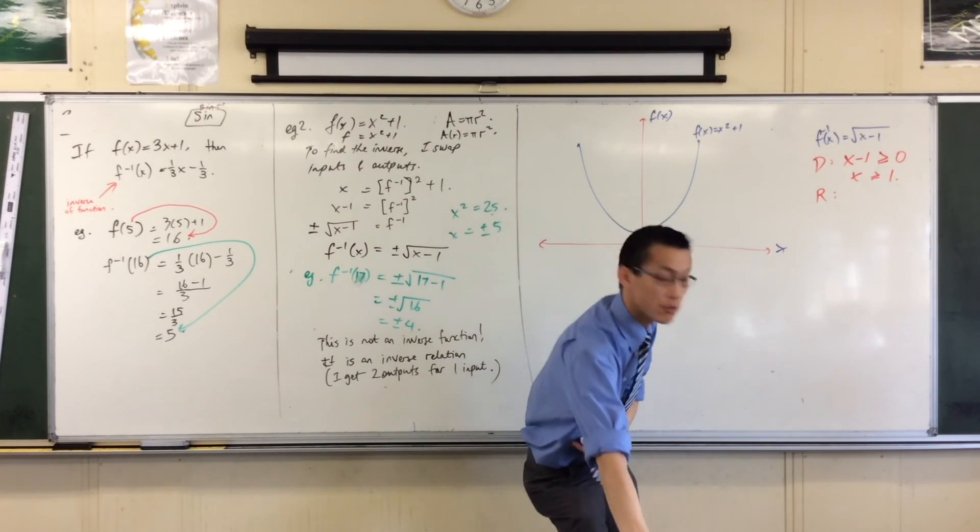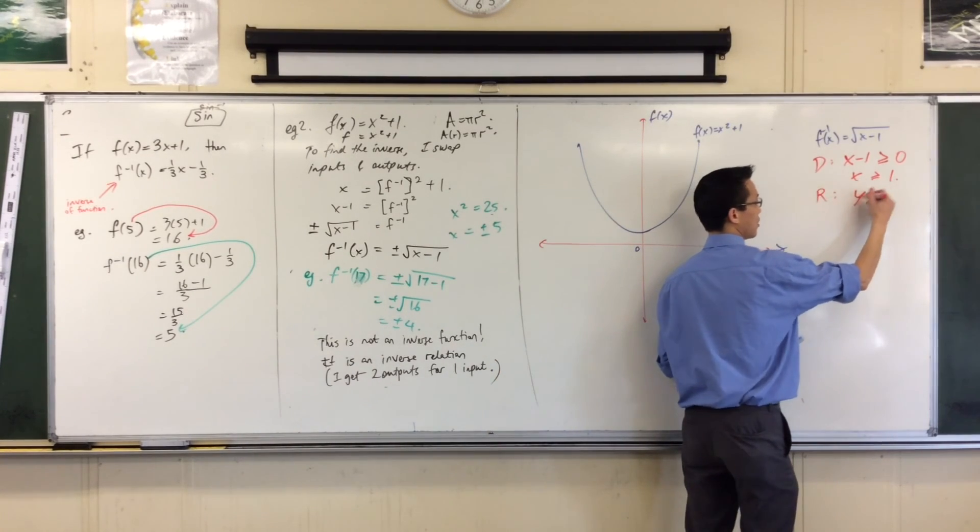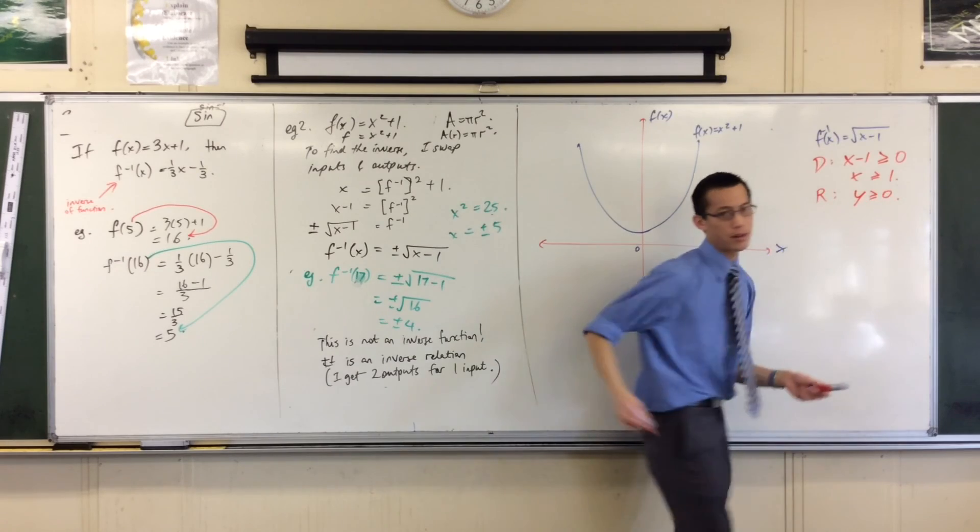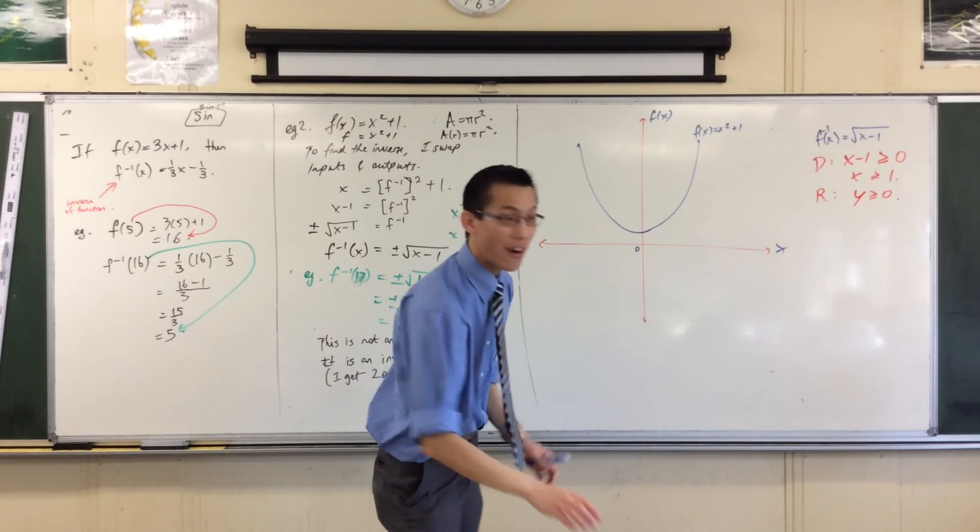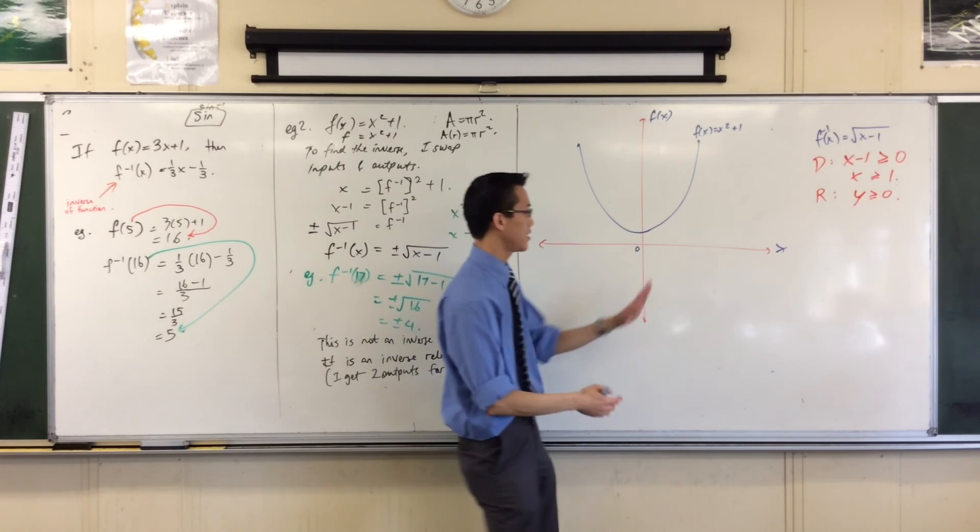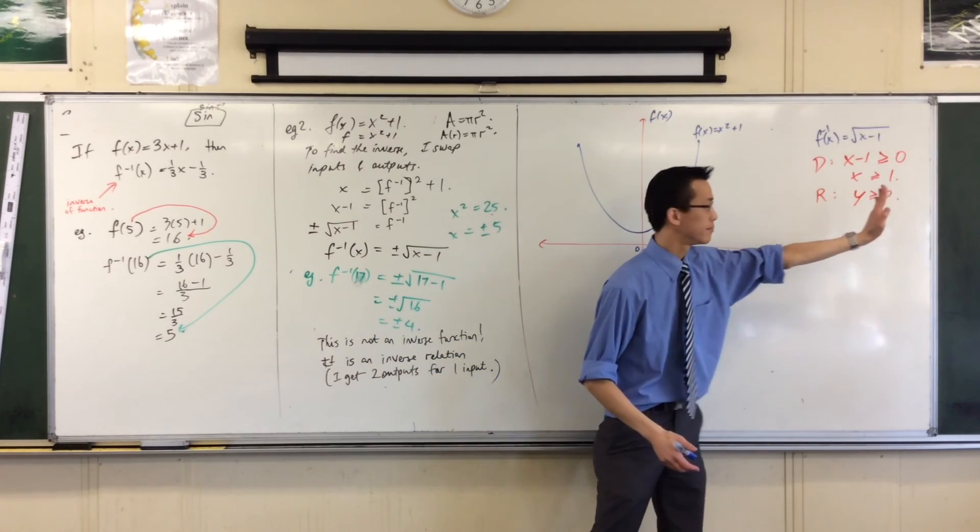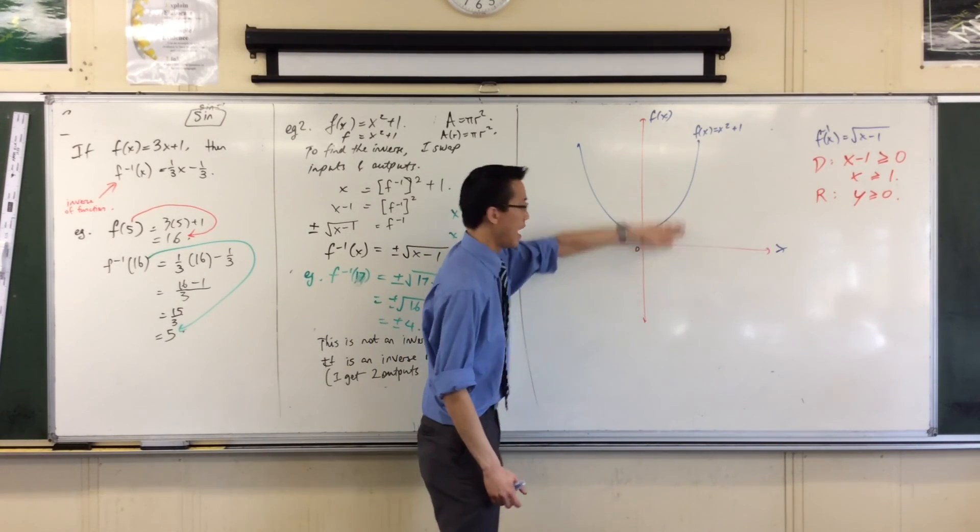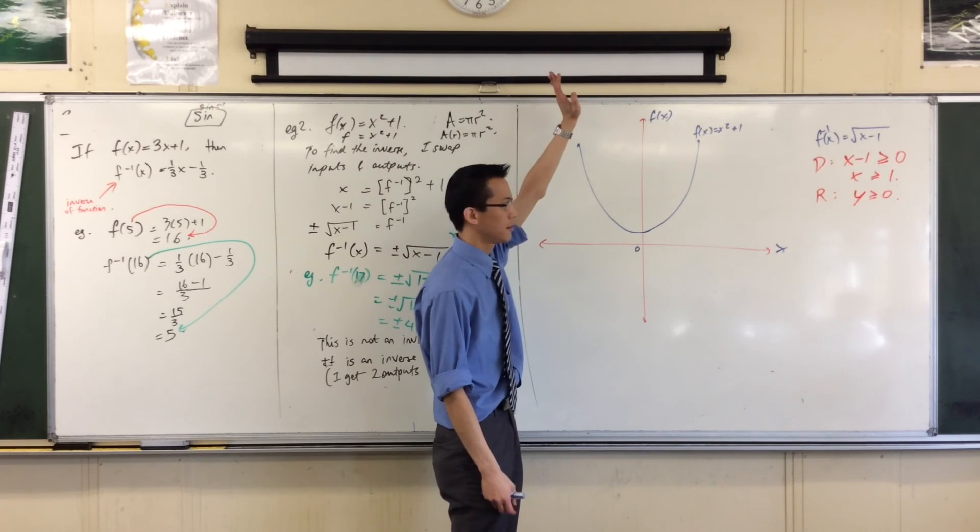So, therefore, the conclusion I draw is the range is that I have to be greater than 0. Alright. Now I know where I can go. Domain is 1 and on. Range is 0 and up.